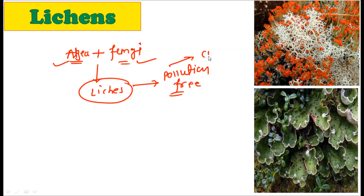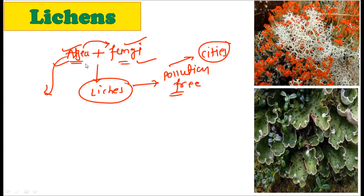That is why they do not grow around cities. Both partners show a great relationship: algae, being green in color, provide food to the fungi by doing photosynthesis. In return, fungi provide water to the algae for performing photosynthesis. So this is a kind of relationship in which both partners get benefited.